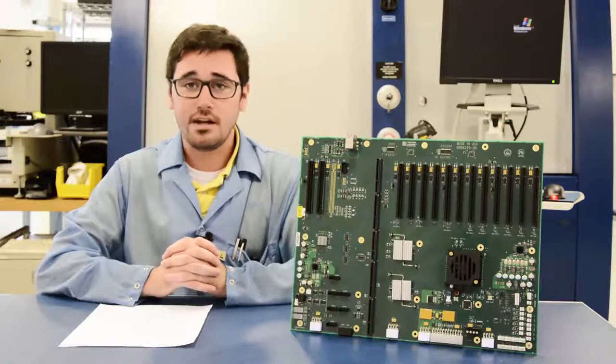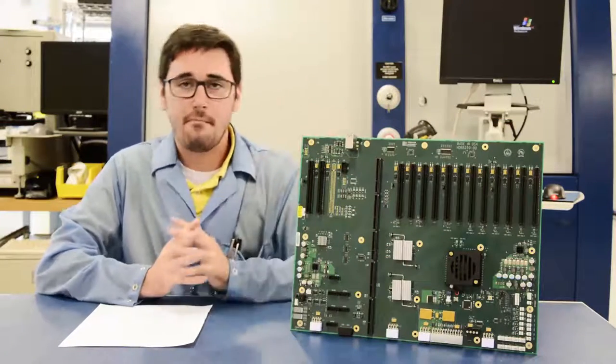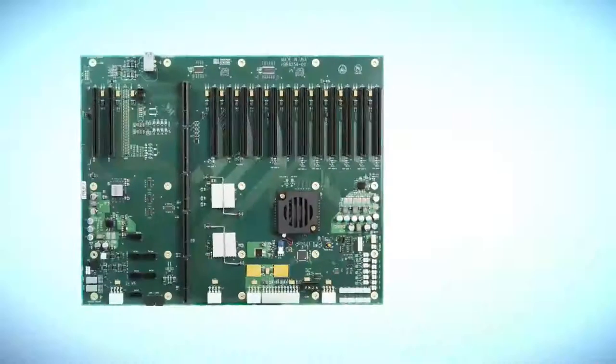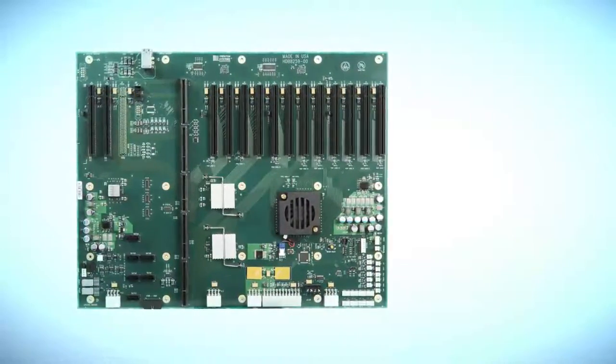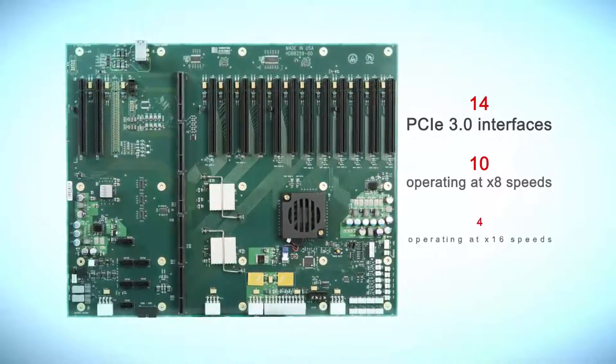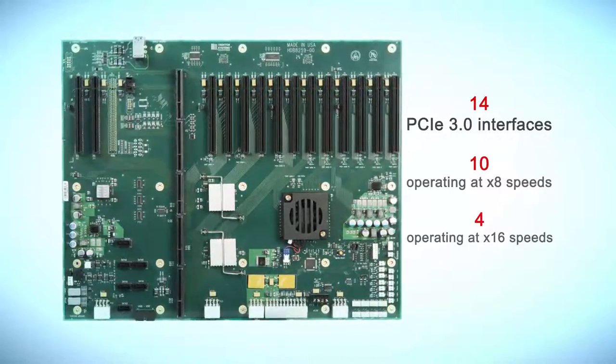The Trenton Systems HDB 8259 is a large format backplane for 5U and select 4U rackmount computers. It features a total of 14 PCIe 3.0 interfaces with 10 operating at x8 speeds and 4 operating at x16 speeds.